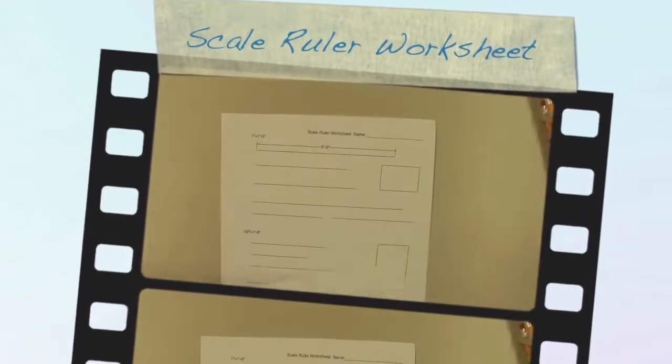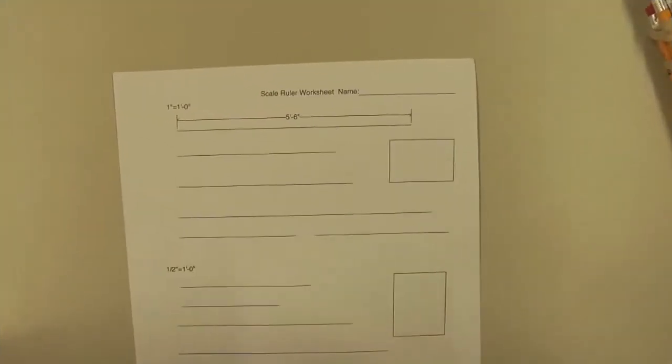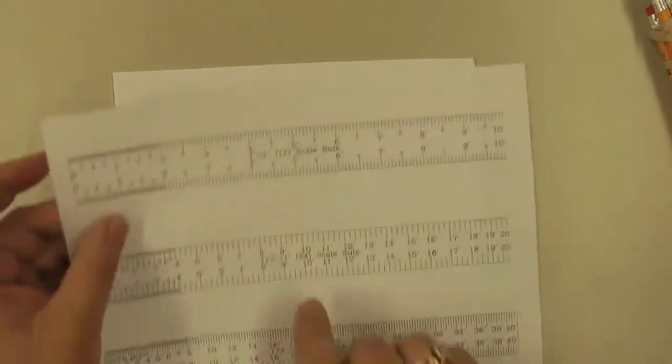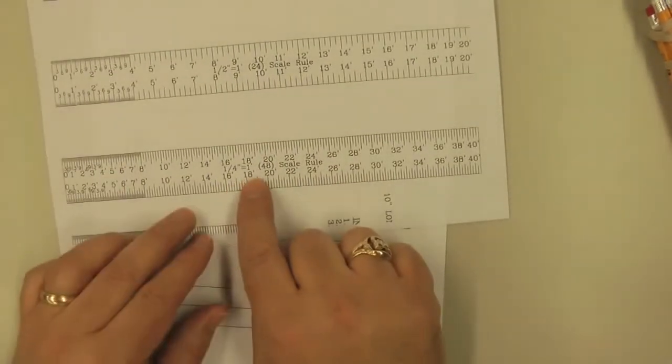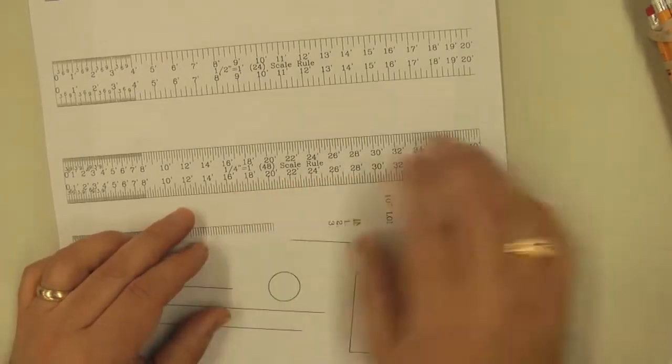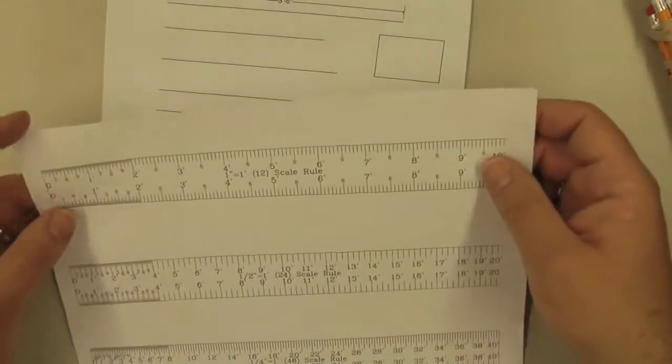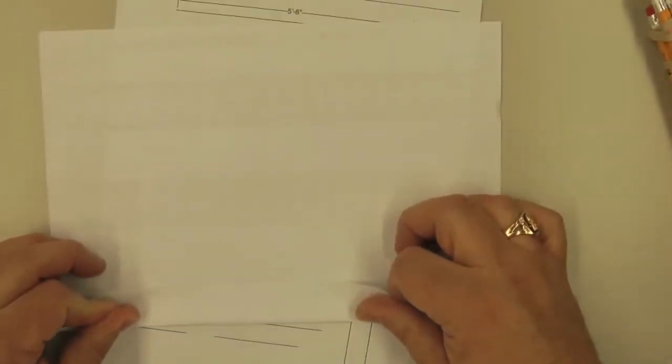So on the scale ruler worksheet, we're going to take our scale ruler. For those of you that have this one here, we have your 1-inch scale, 1-inch scale, and 1/4-inch scale. There are different scales on this piece of paper, and we're going to fold this over so that we have a nice straight edge along the top of the 1-inch scale.